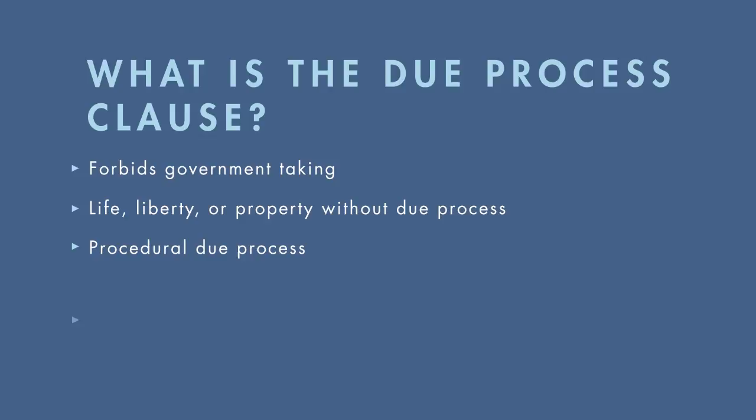Procedural due process is the more traditional sphere of due process. This is essentially the requirement that the government not deprive a person of life, liberty, or property without, at minimum, notice and an opportunity to be heard. What we're really thinking about here is fair process. The kind of process necessary to satisfy this requirement really depends upon the type of interest at stake, but we'll talk more about that in the next video.